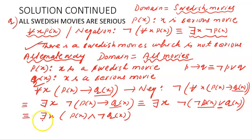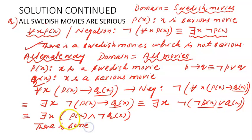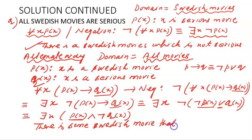So the final statement looks like: there exists x, P(x) and ¬Q(x). In English, this means there is some Swedish movie — because P(x) says x is a Swedish movie — that is not serious, since ¬Q(x) means not serious. I hope you have understood the difference between the two situations: when we take the domain as all movies versus when we take the domain as all Swedish movies. We have done it both ways.